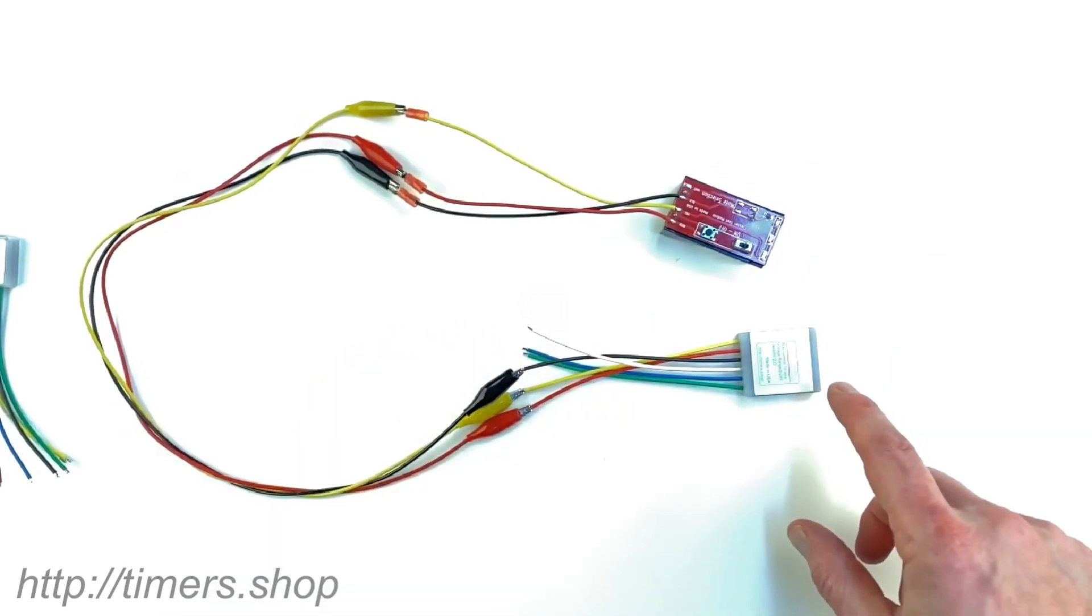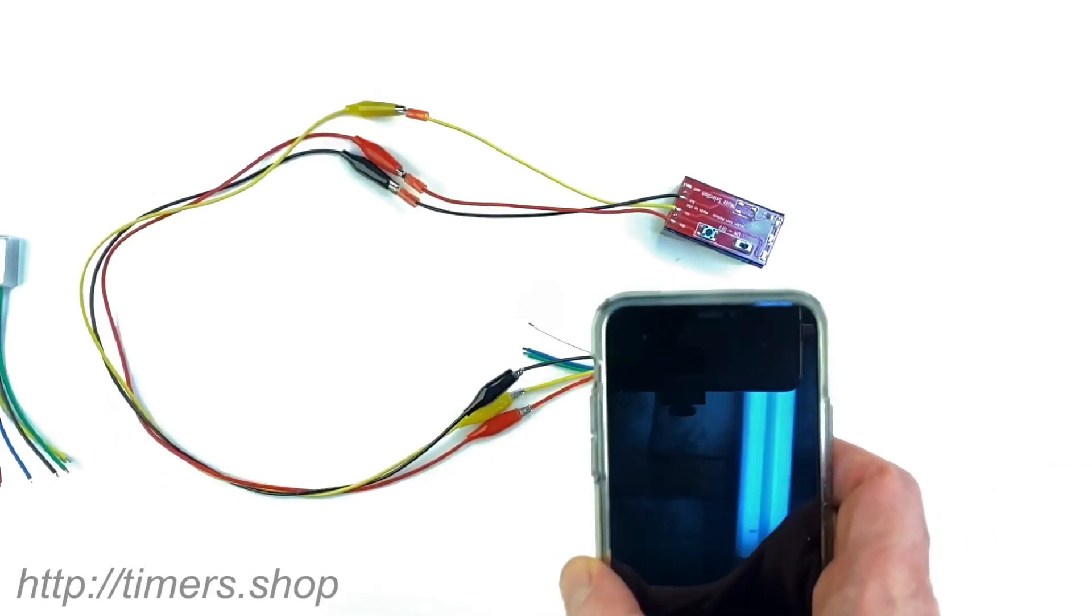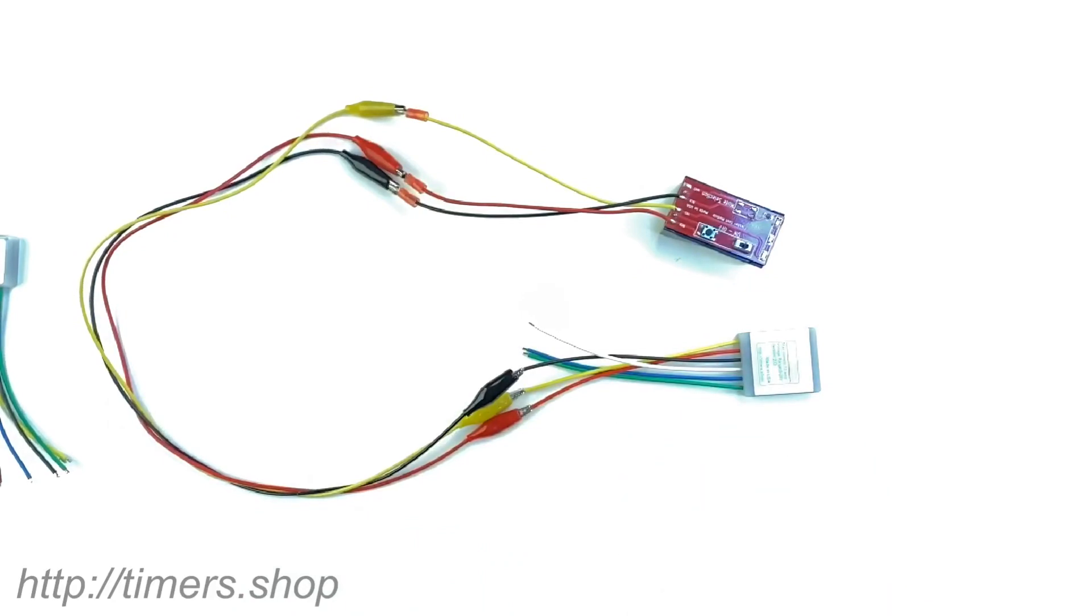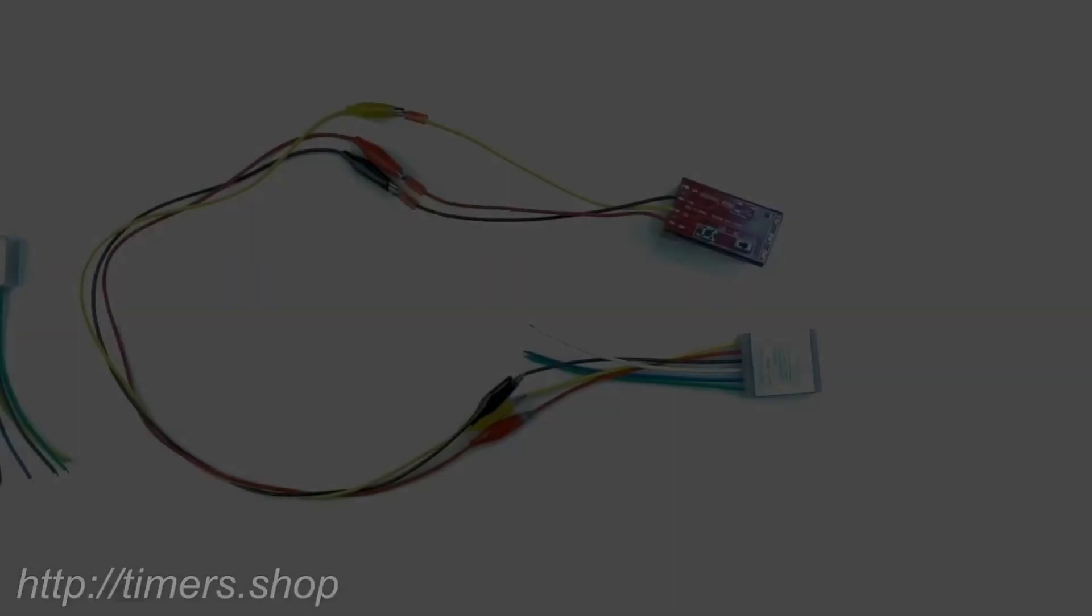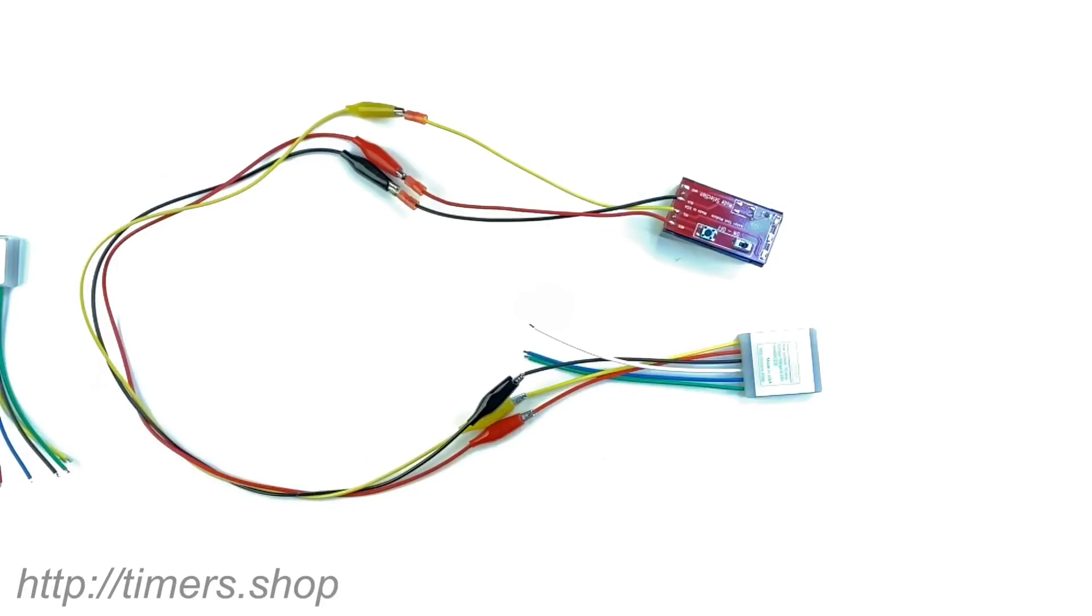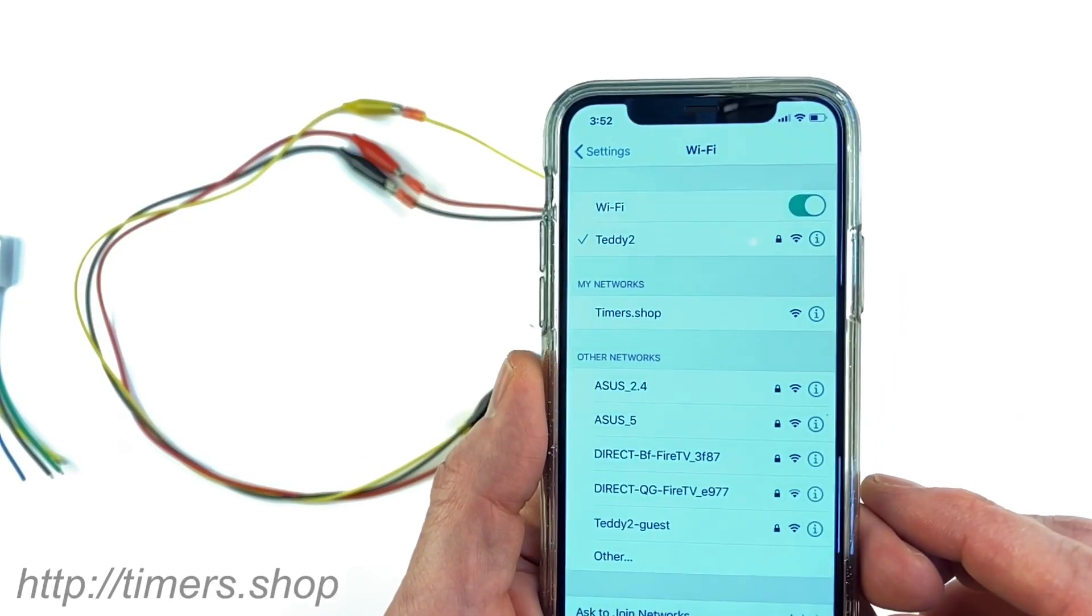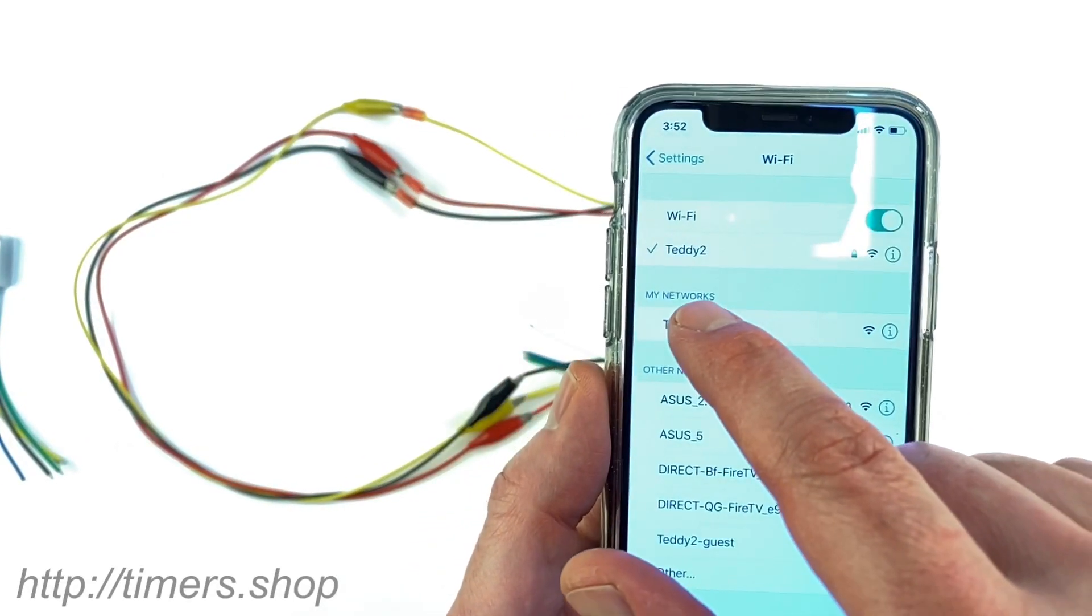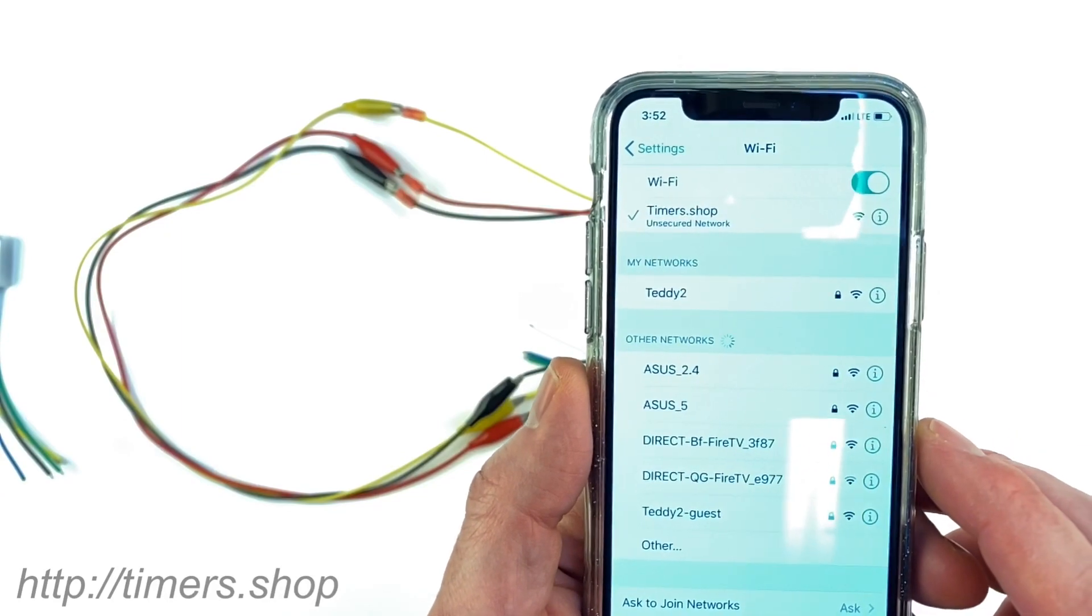Now the timer creates a Wi-Fi network called timers.shop and you can connect to this network from your phone or computer. I'm going to use the phone in this example. I'm going to open the phone and go to the Wi-Fi networks. I'm going to find the timers.shop network, click on it and connect to it.